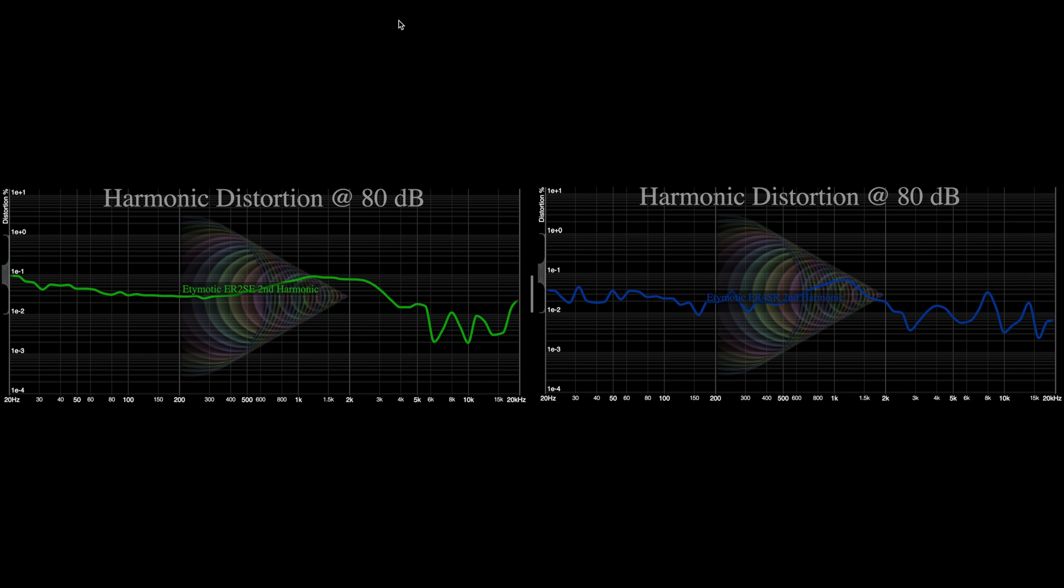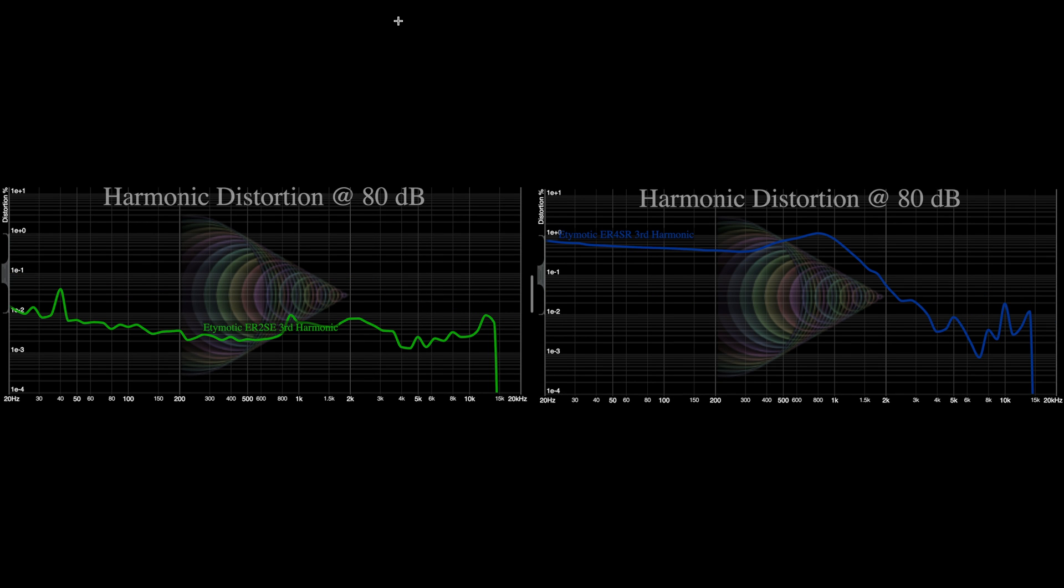Nevertheless, if we analyze the individual orders, we can see that the etymotic ER2SC is dominated by second order harmonic distortion, the least offensive form. On the other hand, the etymotic ER4SR is dominated by third order harmonic distortion, which is proven to be much more audible than second order harmonic distortion. As a result, we can conclude that the etymotic ER4SR is not more detailed than the etymotic ER2SC.